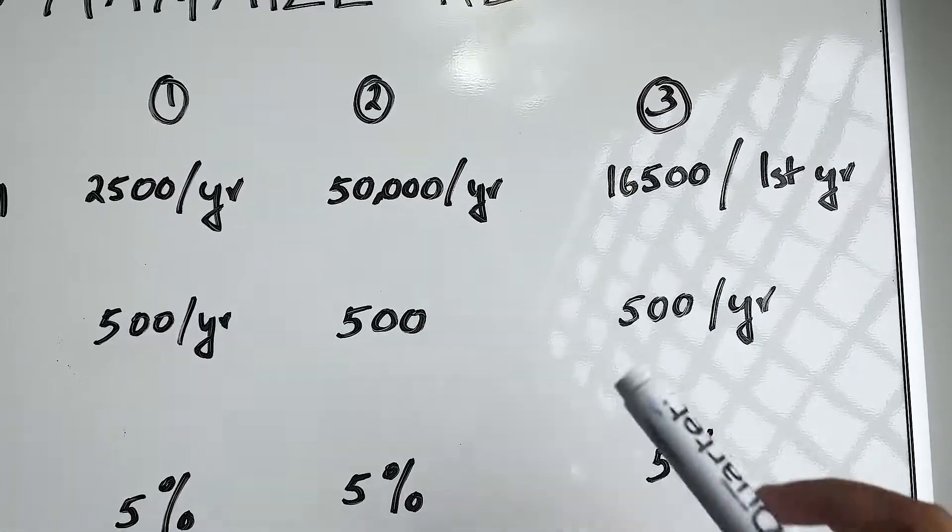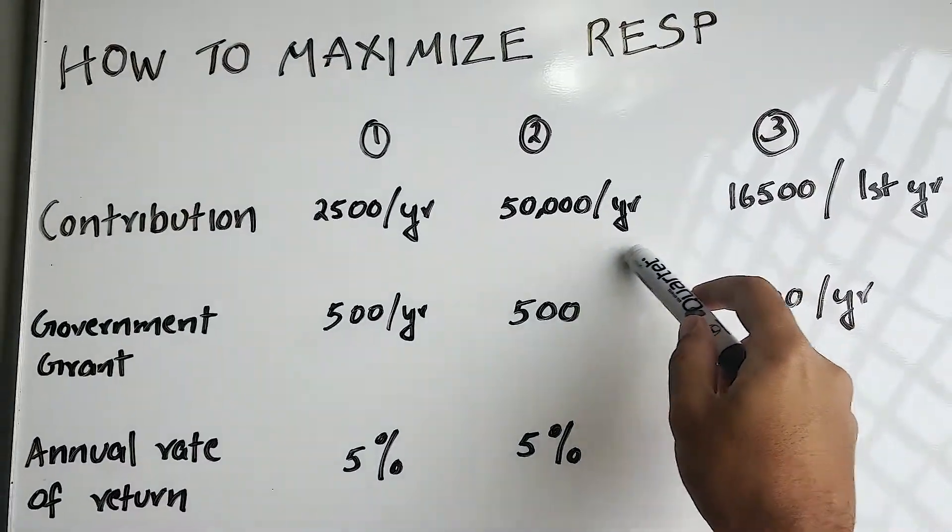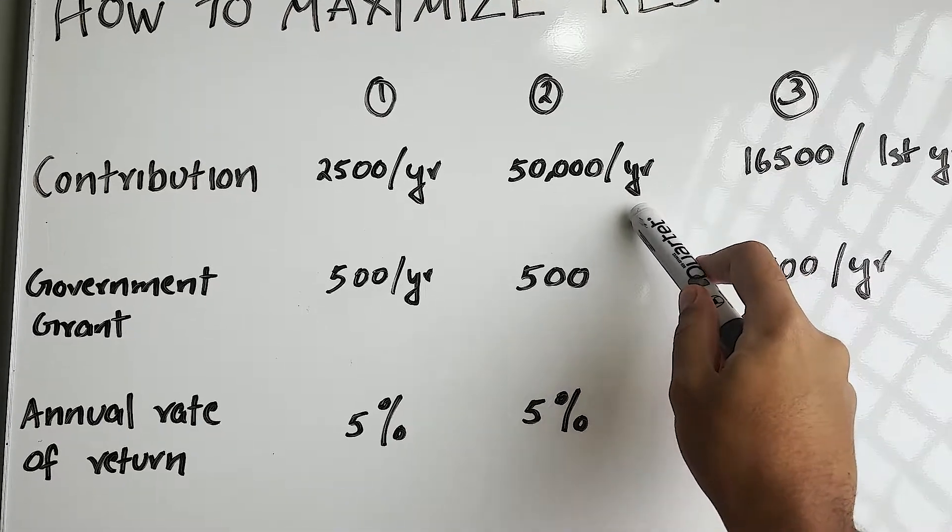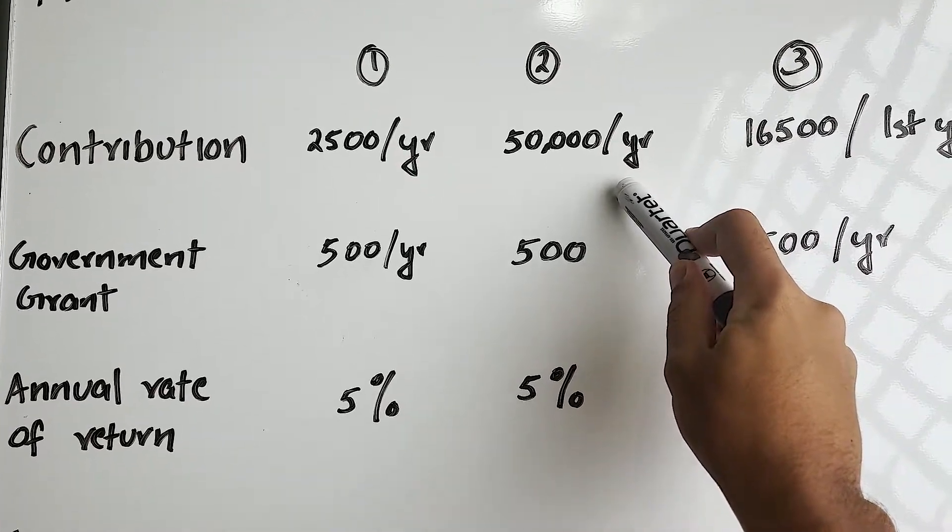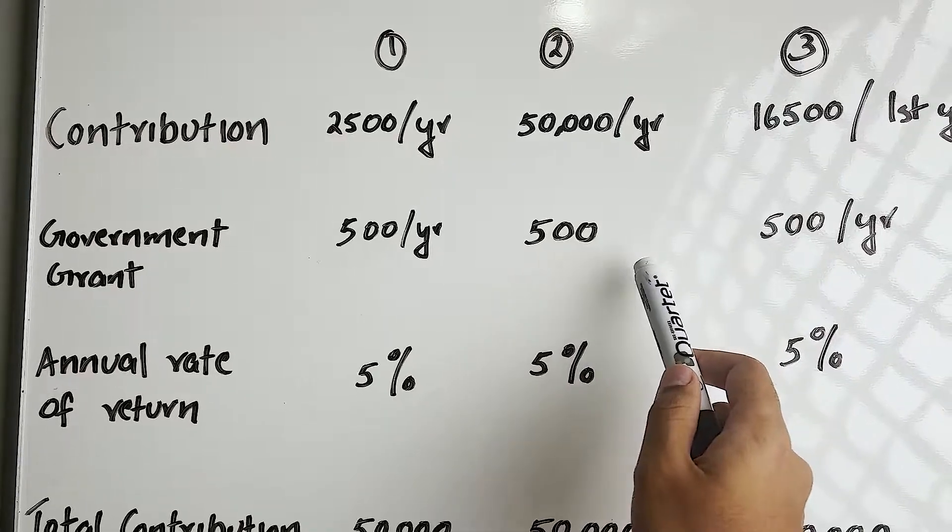Now let's look at the second scenario. Here we are contributing the entire $50,000 when the kid is born. Since we are not contributing any other years, we will only get the government grant for the first year.